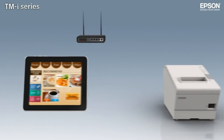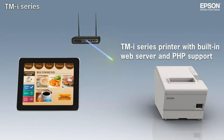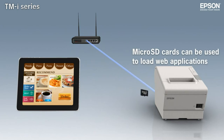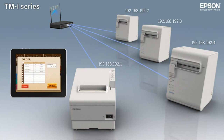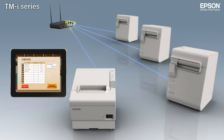With their built-in web server and PHP support, TMI series printers are a low-cost way to add web application printing power to small networks. A single TMI printer can be set up as a hub and used to control conventional POS printers on the same network. They're also ideal for food service order entry and kitchen printout systems.